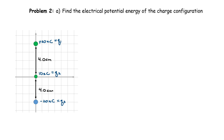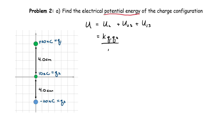Problem two: find the electrical potential energy of this new charge configuration. We have three charges — a 20 nanocoulomb Q1, a 10 nanocoulomb Q2, and a minus 20 nanocoulomb Q3 — with given distances between them. We need the potential energy between every pair: U1,2 plus U2,3 plus U1,3. Using U equals K times Q1 times Q2 over r, plus K times Q2 times Q3 over r, plus K times Q1 times Q3 over r.